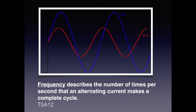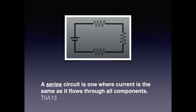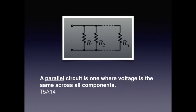Frequency describes the number of times per second that an alternating current makes a complete cycle. A series circuit is one where the current flows in the same direction through all the components — similar to the drawing we had earlier with the light and the battery. Unlike series circuits where the current is constant across all the parts, a parallel circuit is one where the voltage is the same across all the components but the current may be different. Each one of the resistors could have a different current drop. For the exam, know that a parallel circuit is one where the voltage is the same across all components.